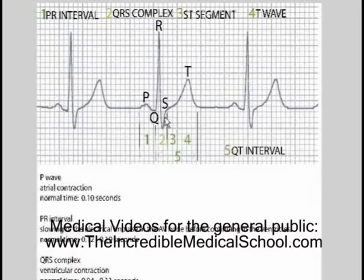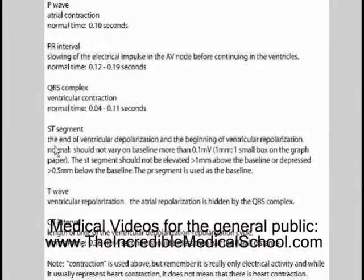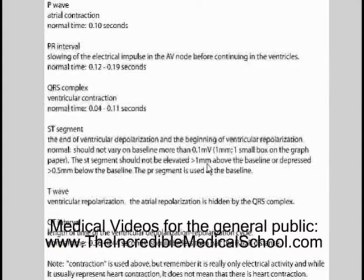The QRS complex normal time is 0.04 seconds to 0.11 seconds. The ST segment is at the end of ventricular depolarization and the beginning of ventricular repolarization. Normally, the ST segment should not vary on the baseline more than 0.1 millivolt, which is one millimeter or one small box on the graph paper. The ST segment should not be elevated greater than one box, and it should not be depressed more than half a box below the baseline. The PR segment is used to represent the baseline.